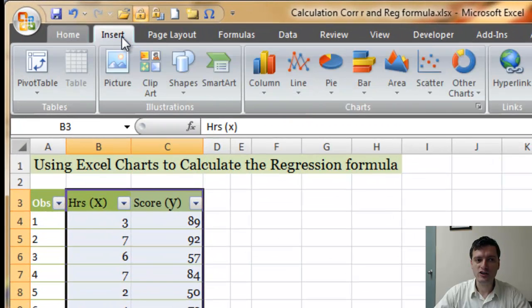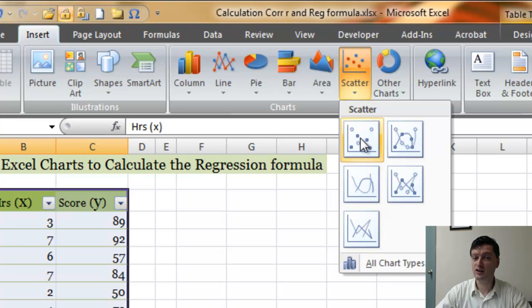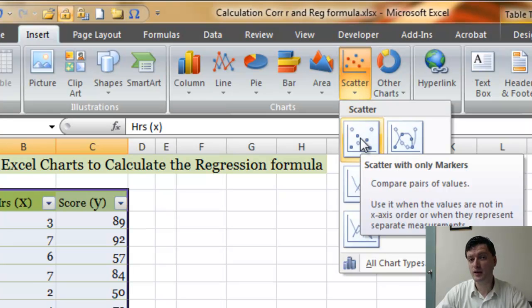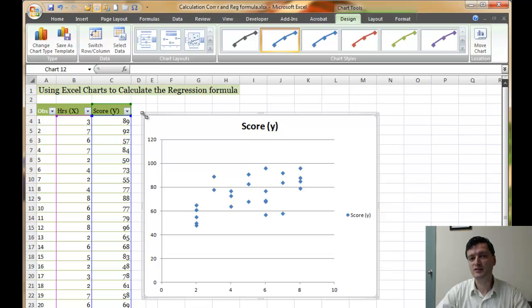Then you would go to the Insert tab, you'd go to the Chart group, and then go to Scatter. When you click on Scatter, in the submenu, you select the simplest scatter or scatter with only markers. And as soon as you select that, Excel gives you a chart or a plot of the correlation between these two variables.